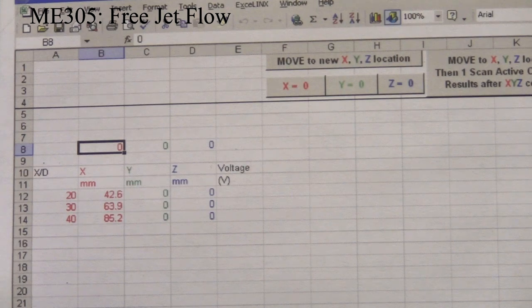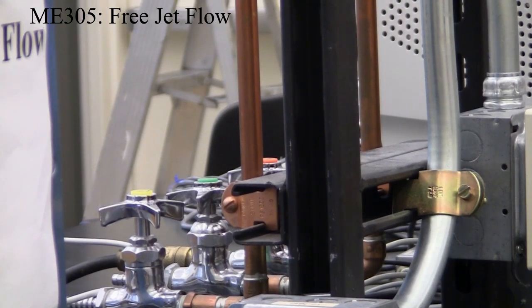So now we have the spreadsheet on and we know how to move the pitot tube. Now we need to turn on the airflow.